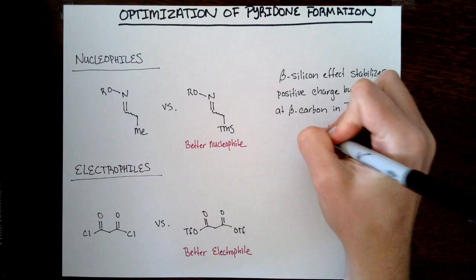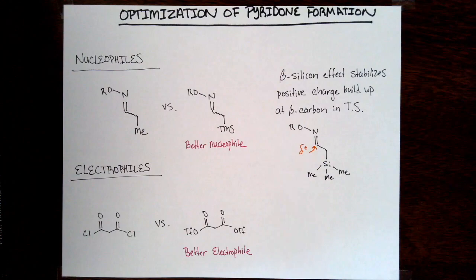The second part of this is the institution of this silicon group. What they believe is happening here is something similar to what you would see in the Hosomi-Sakurai reaction, where we're seeing a beta-silicon activation. As that oxime ether attacks what is now presumably the acyl triflate, you are forming a greater positive charge on the carbon of that oxime ether. Ultimately what the beta-silicon effect does is that sigma Si-C bond can donate its electron density into that empty p orbital, and we can therefore enhance the nucleophilicity of the oxime ether.